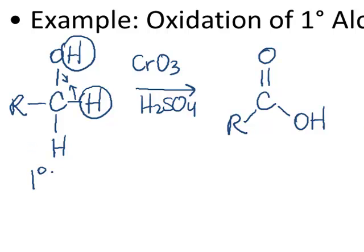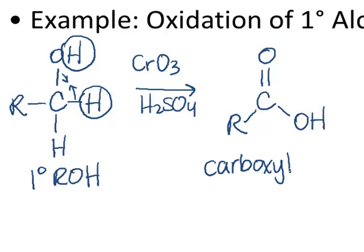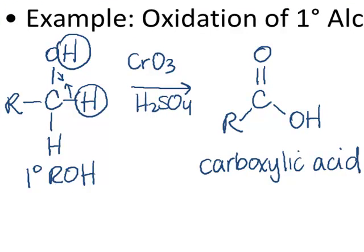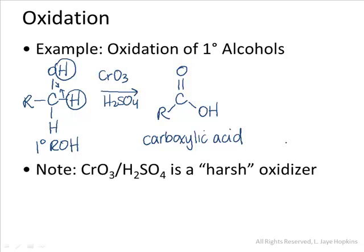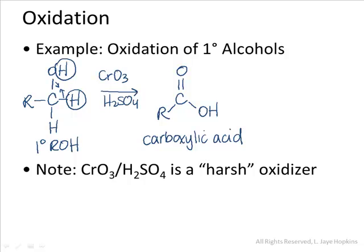So notice how the oxidation of a primary alcohol gives a different product than the oxidation of a secondary alcohol. Our reactant was a primary alcohol, but the functional group that results from this oxidation is what's called a carboxylic acid. The carboxylic acid does contain an OH, but it's different than the OH that was part of the original alcohol. It's important to realize that CrO3 in the presence of H2SO4 is what we would call a harsh oxidizing agent. A harsh oxidizer will turn a primary alcohol into a carboxylic acid.